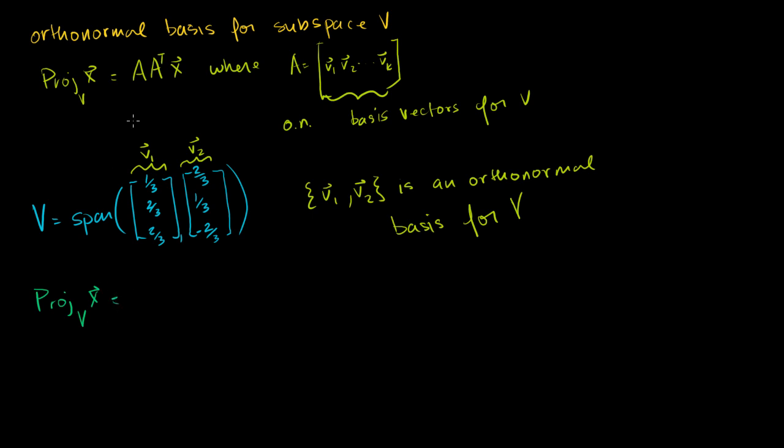Well, we found the result that we just have to construct a matrix A, which has these guys as the column vectors. So 1 3rd, 2 3rds, 2 3rds, and 2 3rds, 1 3rd, and minus 2 3rds.